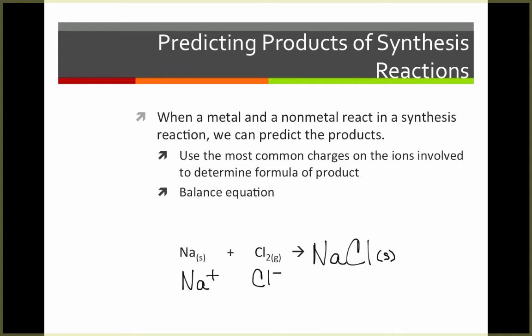Now we have to balance our equation. We have one sodium on each side, so we're good there, but two chlorines on the left. So to balance, I'm going to add a two in front of my NaCl to give me two chlorines on the right and two chlorines on the left, and then a two in front of the Na to give me two sodiums on the left and two sodiums on the right. This equation is now complete and balanced.